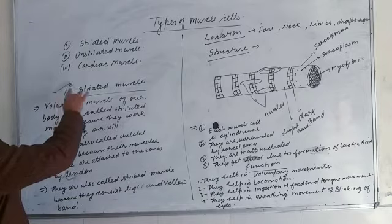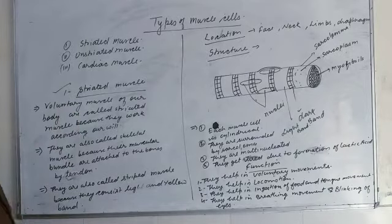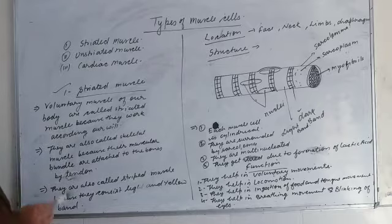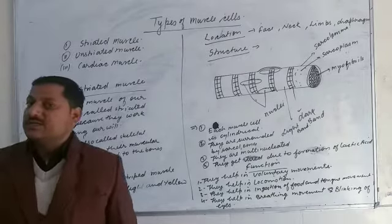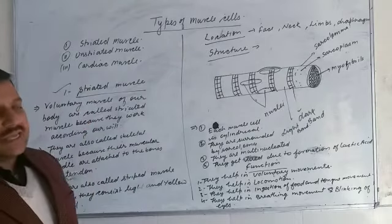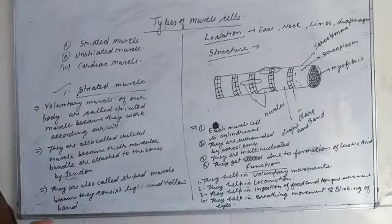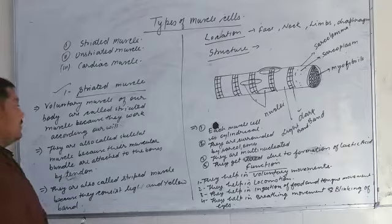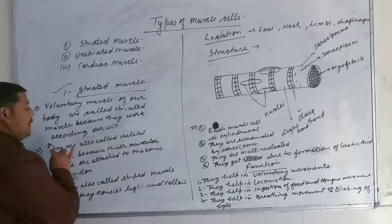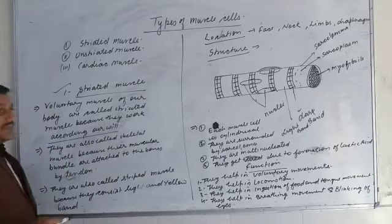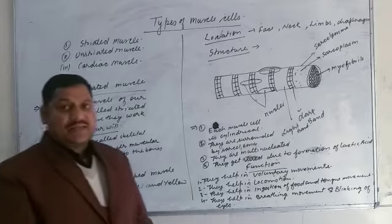First muscle is striated muscle. Striated muscle is a voluntary muscle. This builds our body. This is our limbs.